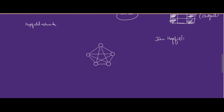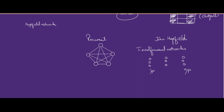A Hopfield network is a neural network where each neuron is connected to every other neuron in the network. This is different from the usual feedforward networks that we study, which have an input layer, a hidden layer, and an output layer. Hopfield networks are not feedforward — you can call them recurrent neural networks, where there is no such thing as a distinct input or output layer.